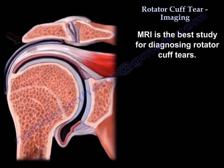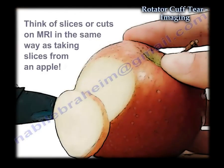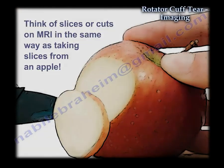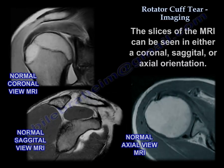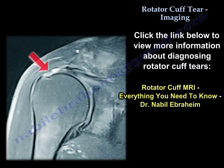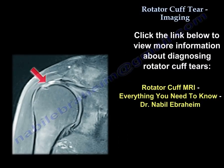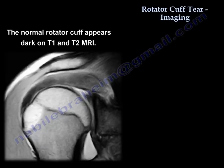We will order an MRI, which is the best study for diagnosing rotator cuff tear. The MRI takes slices or cuts of the bone and soft tissue structures, similar to taking slices from an apple so you can see the inside. The slices of the MRI can be seen in a coronal, sagittal, or axial orientation. The normal rotator cuff appears dark on T1 and T2.